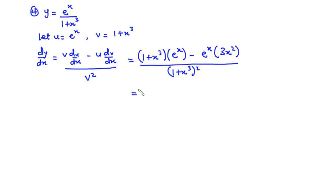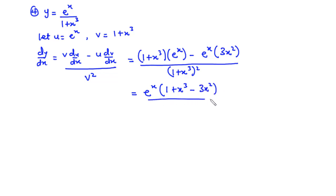Let's continue. We can factor out e to the power x. Inside the bracket we have 1 plus x cubed minus 3x squared, all divided by (1 + x³) squared. And that is dy/dx. So that's it for today's video. Thanks for watching and see you in my next video.